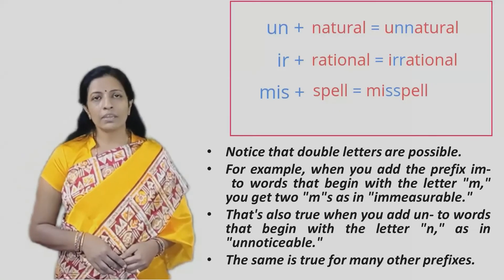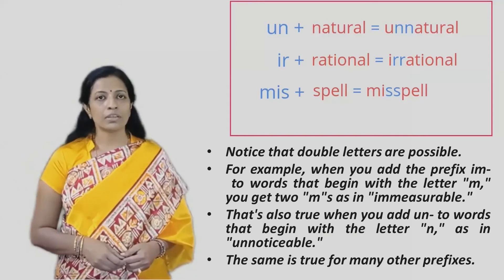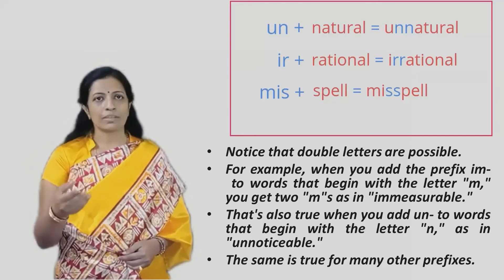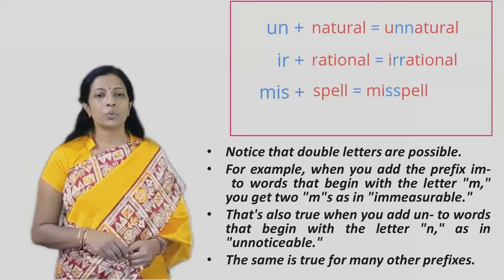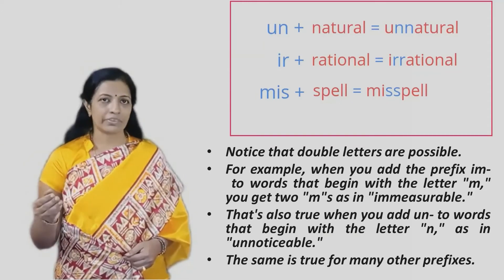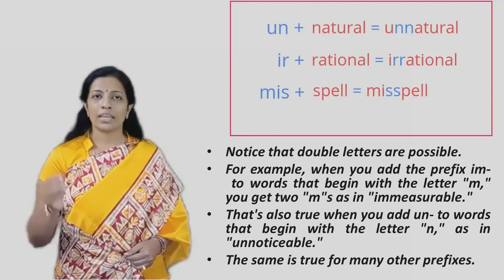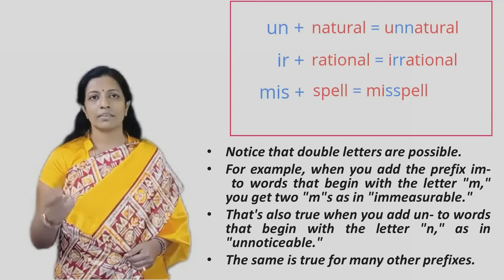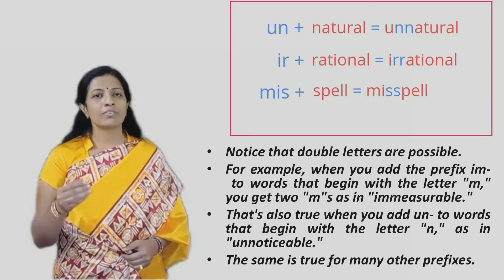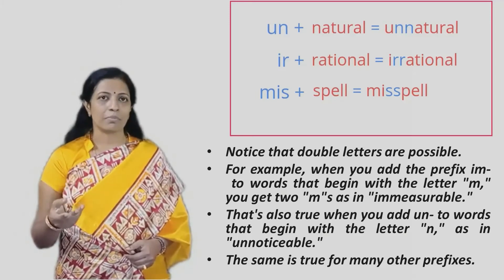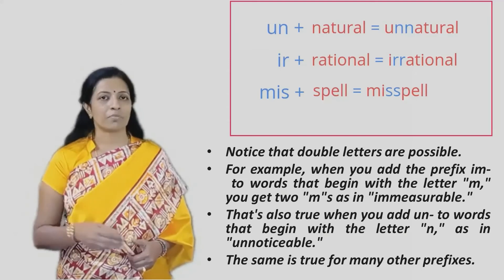Notice that when using prefixes, double letters may appear in the spelling of the new word formed. For example, when we add UN to natural, it becomes unnatural, where N is repeated twice. When we add IR to rational, it becomes irrational, where R is repeated twice. When we add MIS to spell, it becomes misspelled, where S is repeated twice. Similarly, adding UN to noticeable gives unnoticeable.